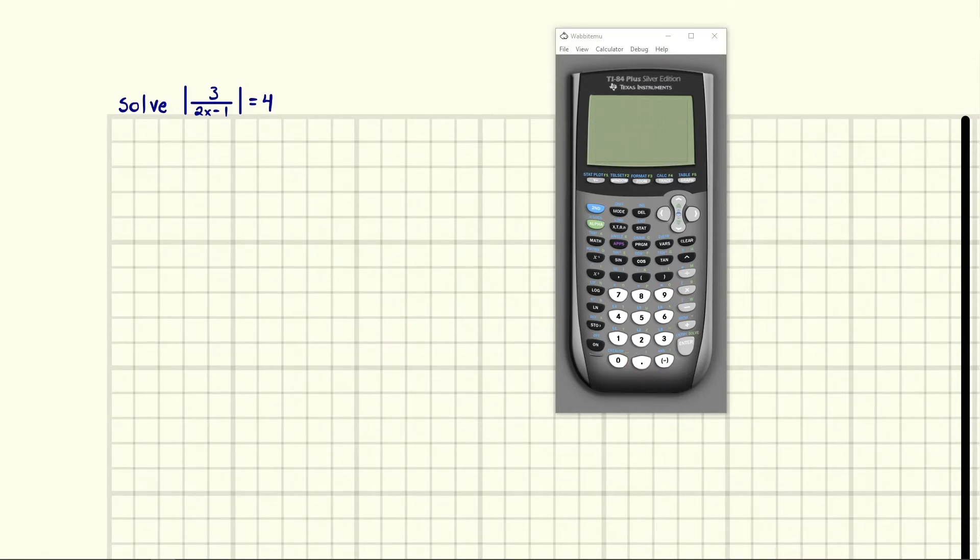There are two cases in which the value in here will equal 4. There's the case where we have positive 4 and that will make this equal to 4, and there's the case where we have negative 4, and when we take the absolute value of negative 4 we'll get positive 4. So that means we need to take this inside bit and set it equal to positive or negative 4.